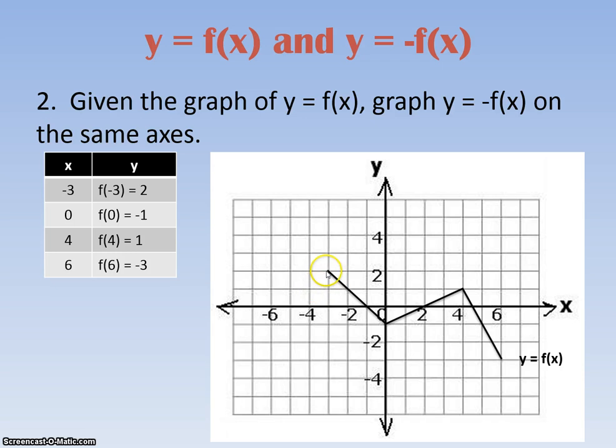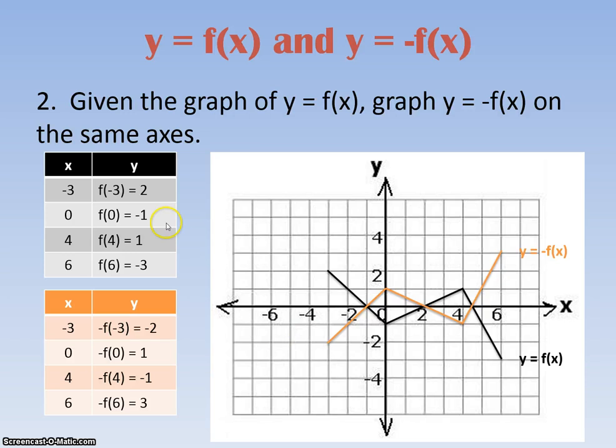So this guy is now going to become a negative 2. Take a look at all the y-values again, and all the y-values down here. They're opposites of each other, and that's how you get your reflection over the x-axis.